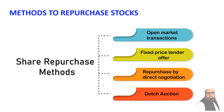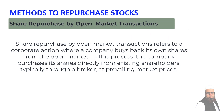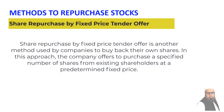Companies can repurchase their shares using one of four methods: open market transactions, fixed price tender offer, repurchase by direct negotiation, and Dutch auction. Share repurchases by open market transactions refer to a company buying back its own shares from the open market, purchasing shares directly from existing shareholders — typically through a broker at prevailing market prices. The second method is a fixed price tender offer, where the company offers to purchase a specified number of shares from existing shareholders at a predetermined fixed price.